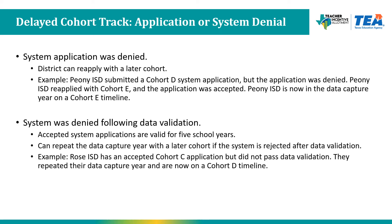In some cases, a district's cohort track is delayed because their application or full system was denied at one of the two approval stages. If a system application is denied, the district can reapply with a later cohort. For example, P&E ISD submitted a Cohort D system application but it was denied; the district reapplied with Cohort E and the application was accepted, placing them in their data capture year on a Cohort E timeline. The second scenario is if the system is denied following data validation — the system application remains accepted and active, and the district can repeat the data capture year with a later cohort. For example, Rose ISD had an accepted Cohort C application but did not pass data validation, so they repeated their data capture year and are now on a Cohort D timeline.